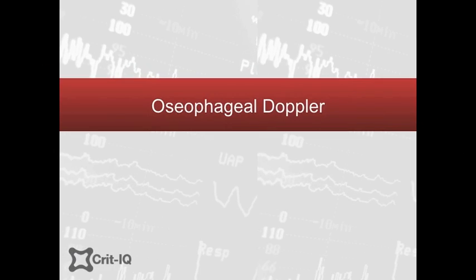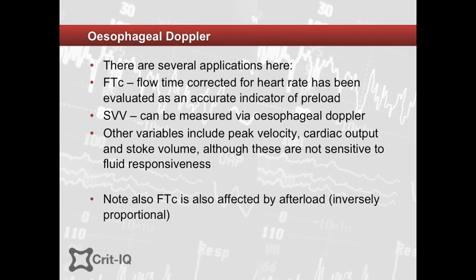Esophageal Doppler can be used in several ways. Flow time corrected (FTc) can measure preload, and this has been shown to be more reliable on trend analysis than pulmonary artery occlusion pressure alone. Stroke volume variation can also be measured, and in a recent study from January 2013, it was found to be superior to flow time correction. Peak velocity, cardiac output, and stroke volume can also be measured using esophageal Doppler.